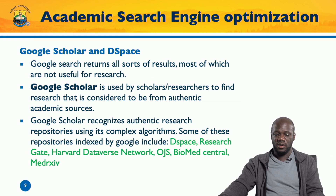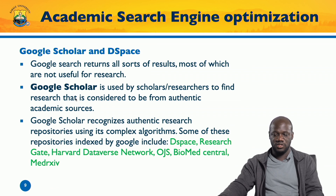Other repositories naturally indexed by Google Scholar include ResearchGate, Harvard Dataverse network — an open source platform developed by Harvard, just like DSpace was developed by MIT — OJS (Open Journal Systems), which is a journal management system also naturally indexed by Google Scholar, and Biomed Central, among many others.